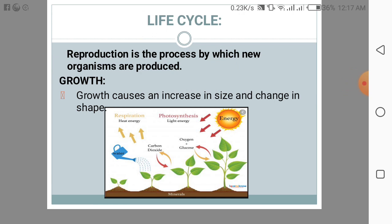Sexual reproduction involves the production of special male and female reproductive cells which are called gametes. In plants, male gametes are contained in pollen grains. Female gametes are called ovules, also known as eggs. When a male gamete combines with a female gamete, a new individual of the species is produced.